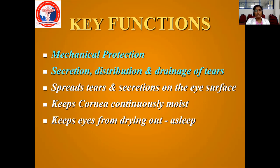Then comes secretion, distribution, and drainage of tears. The lids have multiple glands called the meibomian glands, present in the tarsal plate. These secrete the sebum or oily secretion of the tear film. The upper lid contains approximately 40 to 50 glands and the lower lid has 20 to 25 glands. These secrete the oily layer, which spreads over the cornea. Whenever the lid blinks, it spreads the tear film over the cornea — that is distribution. It also helps in drainage of tears.